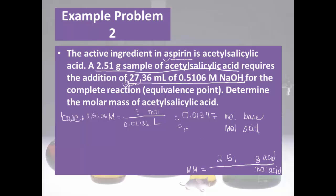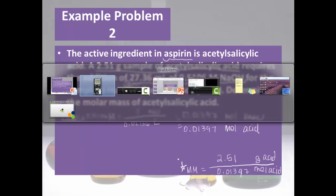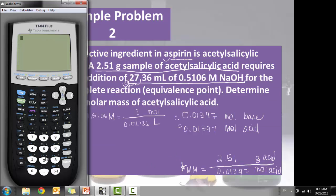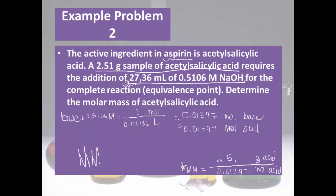Since moles of acid equals moles of base, moles of acid is 0.01397. For our final molar mass calculation: 2.51 grams divided by 0.01397 moles. Three sig figs because of the 2.51, so we round to 180. grams per mole. That's the molar mass of acetylsalicylic acid, the active ingredient in aspirin.